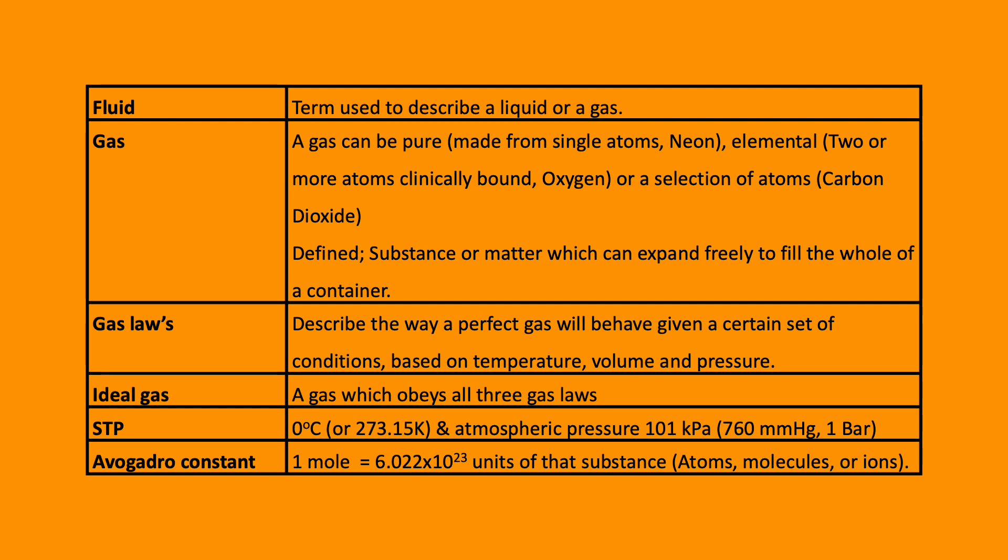The Gas Laws are a group of physical laws modelling the behaviour of gases developed from experimental observations back in the 17th century. This describes the way a perfect gas will behave under a certain set of conditions: temperature, volume and pressure. The ideal gas will obey all three laws.